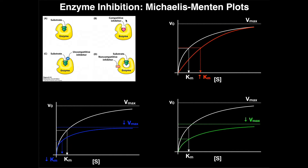Let's start by looking at the competitive inhibitor. A competitive inhibitor literally binds in the active site — it really binds in the same spot as the substrate. You can actually see it binding in the same spot. It has a different chemical structure, but it's effectively just blocking the substrate from getting into the active site.